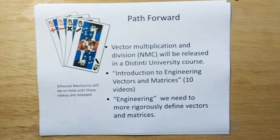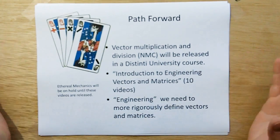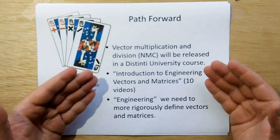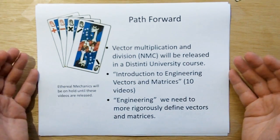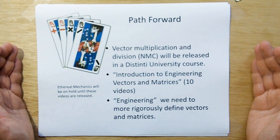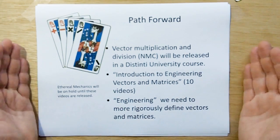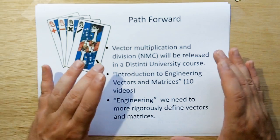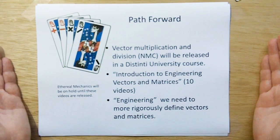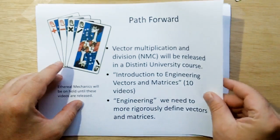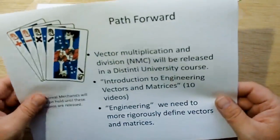So what's the path forward? Vector multiplication and division, which I've been calling the new math construct, will be released in a Distinti University course — another series of YouTube videos on my YouTube channel. It's going to be called Introduction to Engineering Vectors and Matrices, estimating about ten videos. I've had to more rigorously define vectors and matrices. I deal with real quantities, real things you can build from, so I need only a small subset but I'm going to rigorously define those. Therefore, our vector multiplication and division do not violate dimensional analysis rules. Ethereal Mechanics will be on hold until these videos are released, estimating about three or four months.